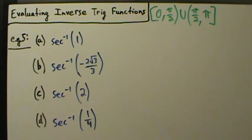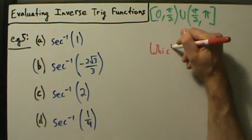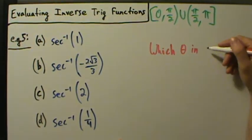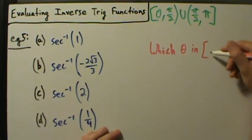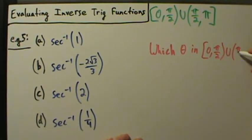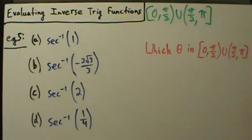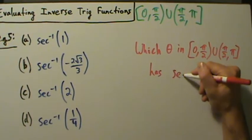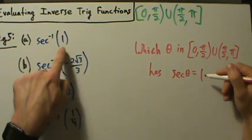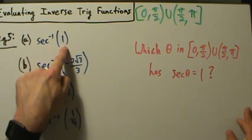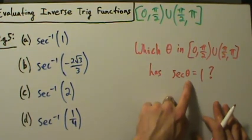We approach this just like before — ask ourselves the exact same question: which theta in the range of the inverse secant function has secant of theta equal to 1? We want the inverse secant of 1, so we ask ourselves: what number inside of this range has a secant equal to 1?